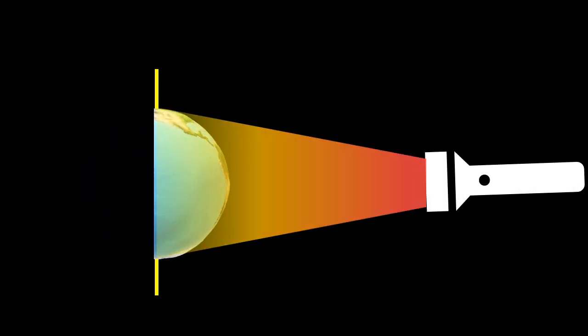When the Earth rotates on its axis, there are two constant points: one on the north and the other on the south. The northern point is called the North Pole and the southern point is called the South Pole. The imaginary line that connects the North Pole and the South Pole through the center of the Earth is called the axis.